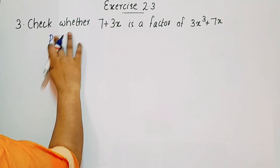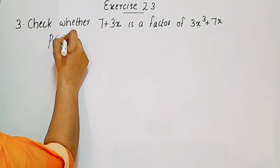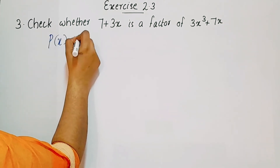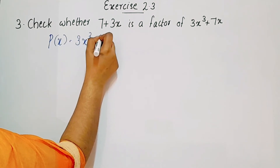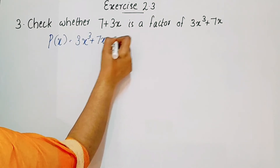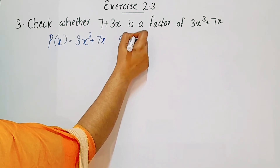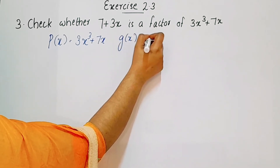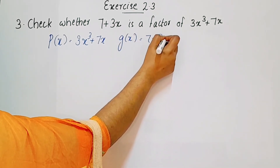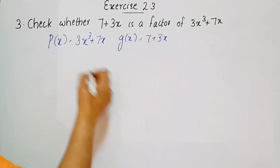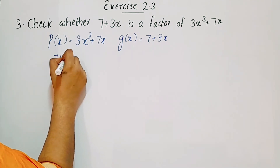P of x is equal to 3x³ plus 7x. The divisor, g of x, is equal to 7 plus 3x.